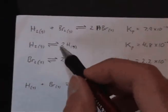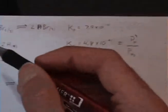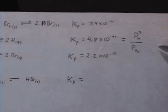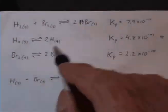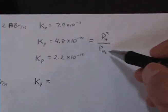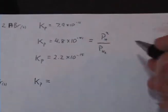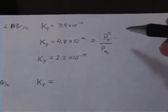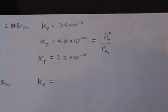Now if we flip that around, what does that do? Here we have the products over the reactants. So if we flip it around, now our product ends up being on the bottom and a reactant on the top. So we see that if we flip our equation we get the reciprocal in our Kp.